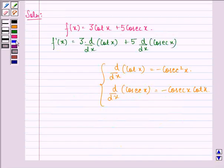f'(x) is 3 times minus cosecant squared x plus 5 times minus cosecant x cot x.